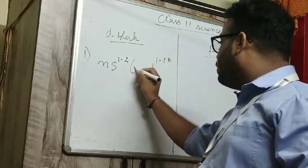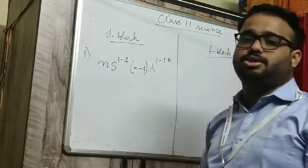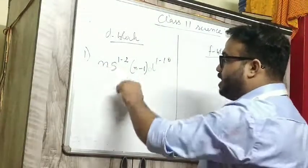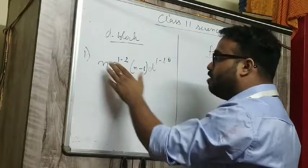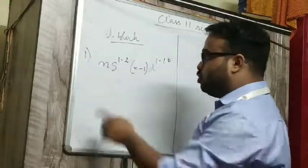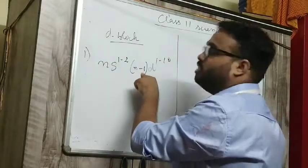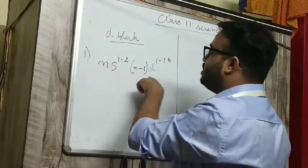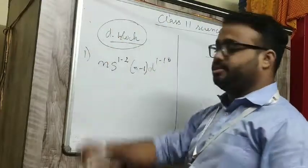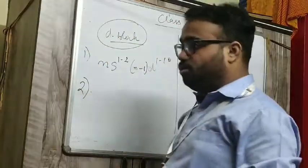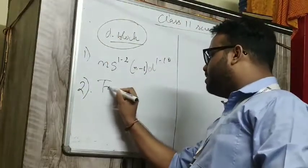4s1 3d1, 4s2 3d1, 4s2 3d3, 4s1 3d5. So here it is 4, here 4 minus 1 is 3. It is 5, 5 minus 1 is 4. So this is the general electronic configuration of d block elements.